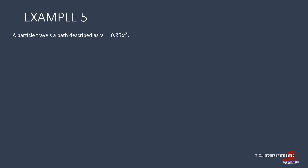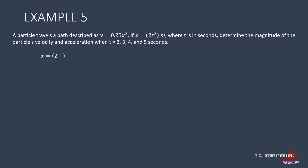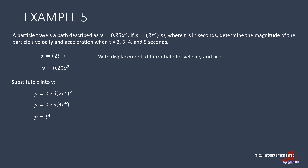Another example has two displacement equations where we solve for the magnitude of velocity and acceleration over a series of times. With y equal to 0.25x² and knowing that x equals 2t², we plug x into y so both parameters are in terms of time. Placing 2t² as x into the equation of y gives y equal to t⁴. Since x and y are given and velocity and acceleration are required, differentiate both x and y twice.